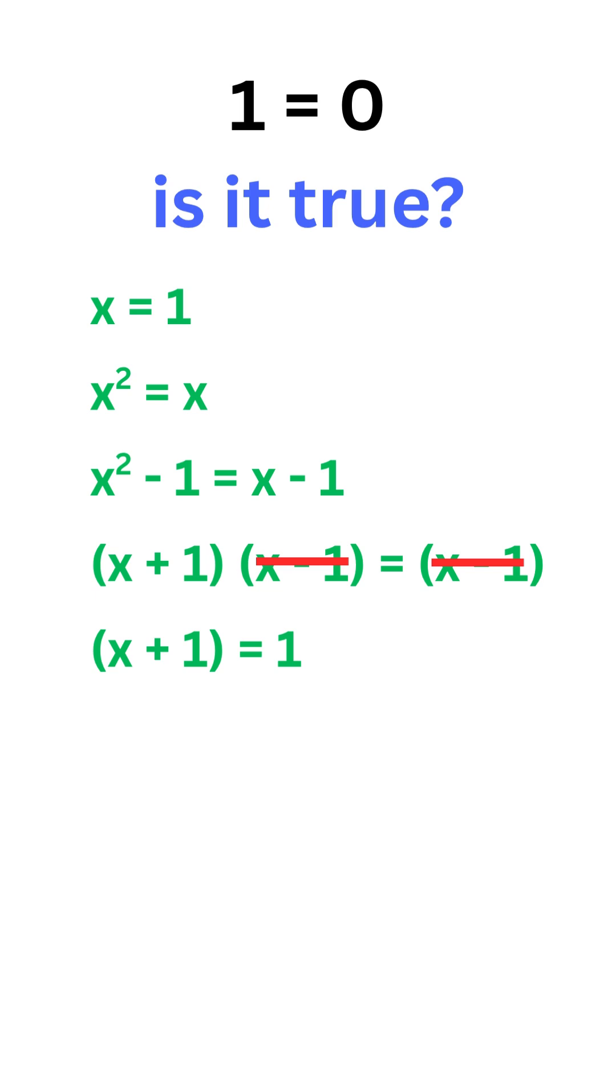We will be left with x plus 1 equals 1. Now, we are getting somewhere. Let's move plus 1 from left to right. It becomes x equals 1 minus 1. That results in x equals 0.